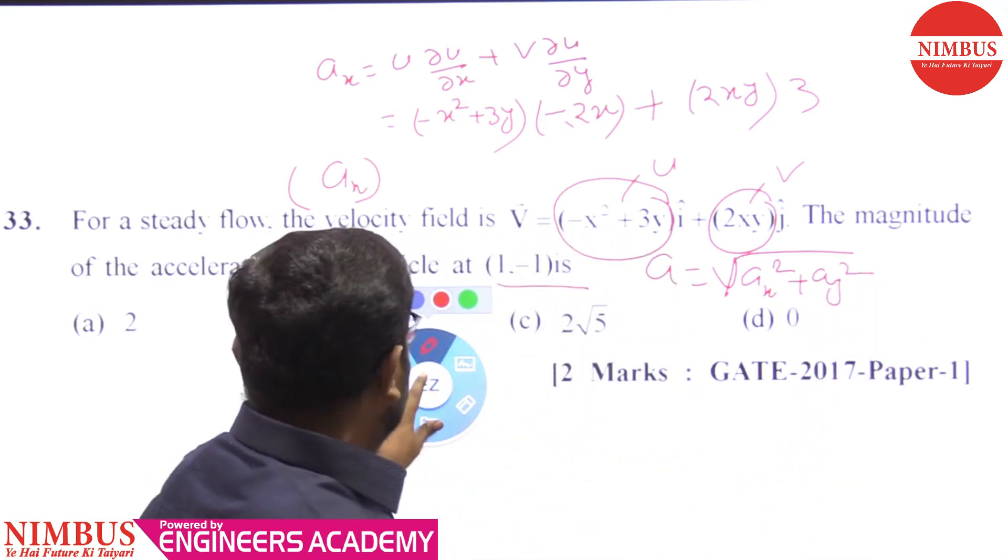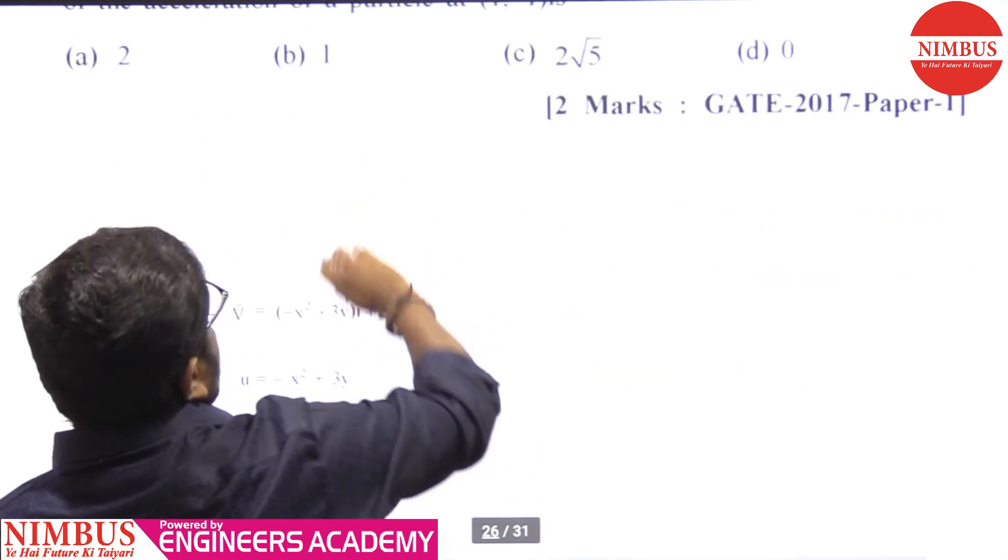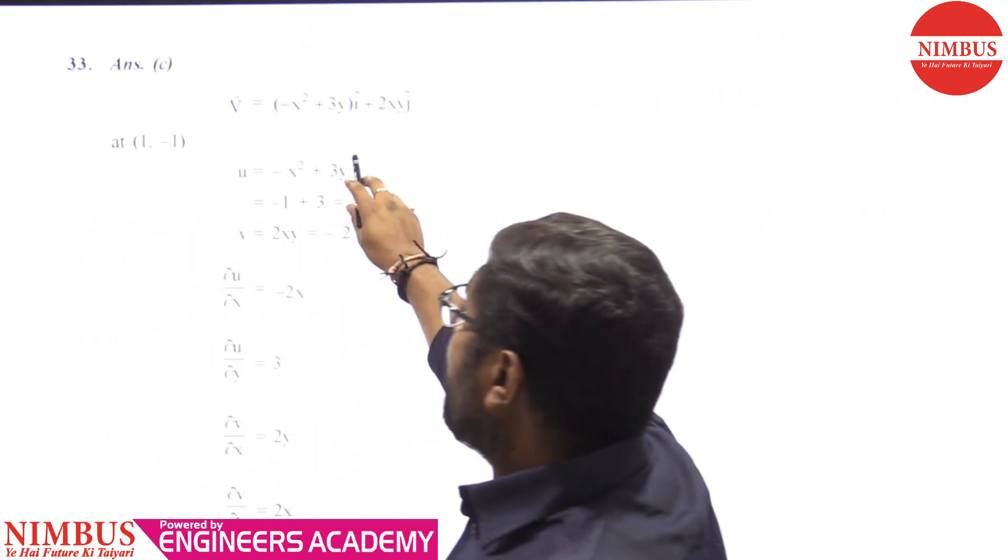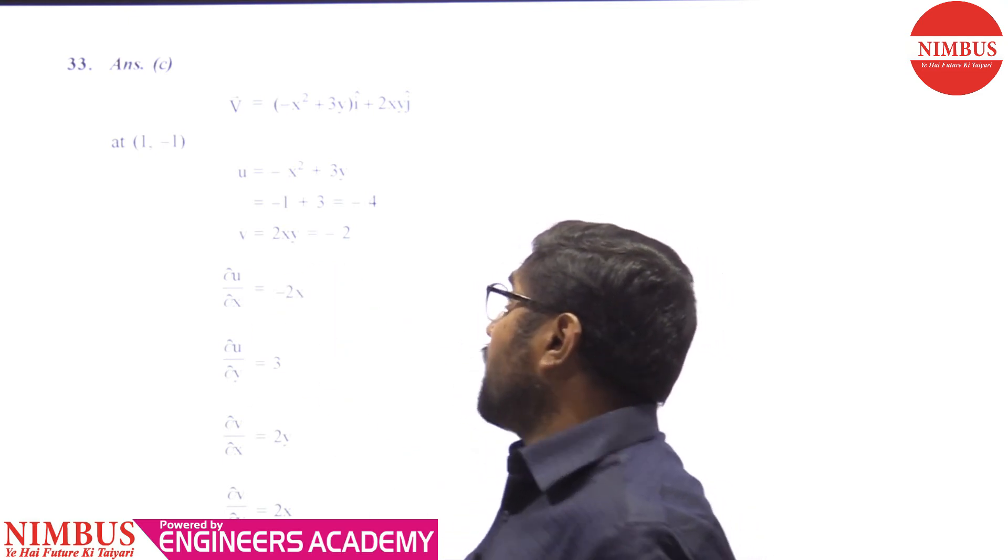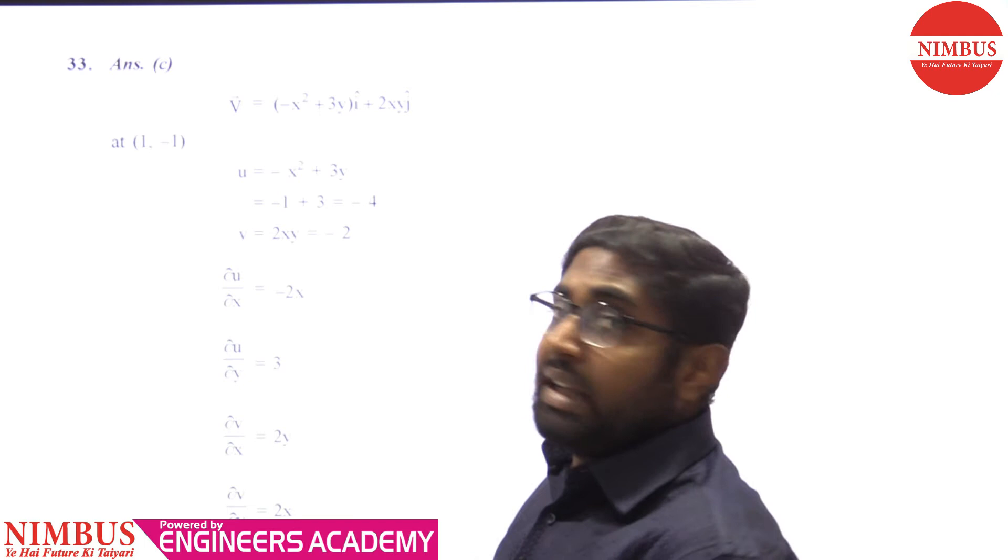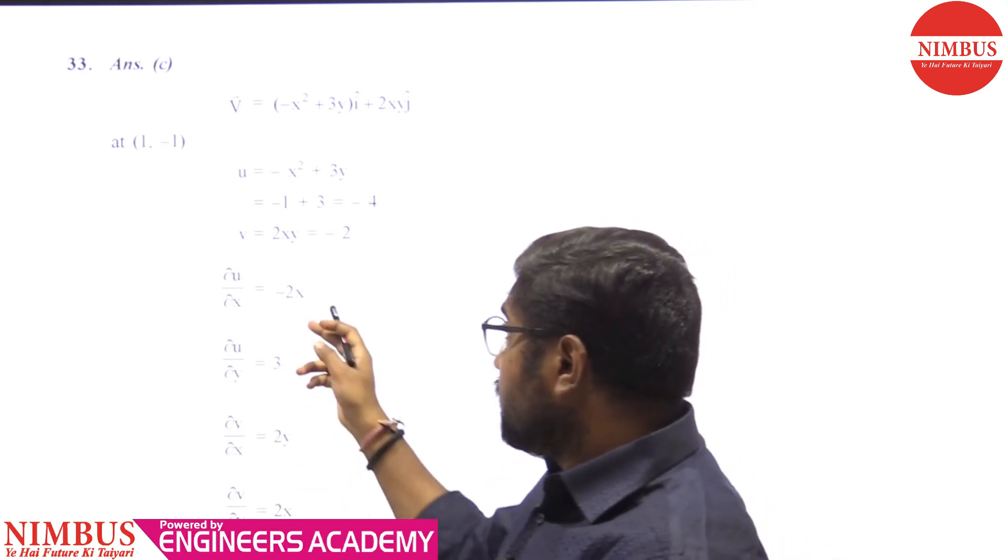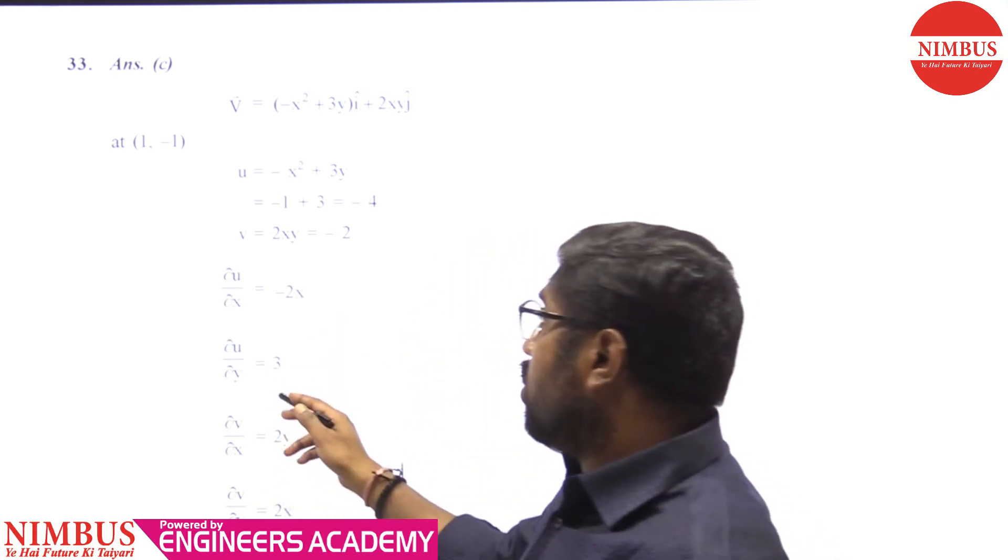U and V, if you find out separately: ∂U/∂X is -2X, ∂U/∂Y, ∂V/∂X - this is the first formula.